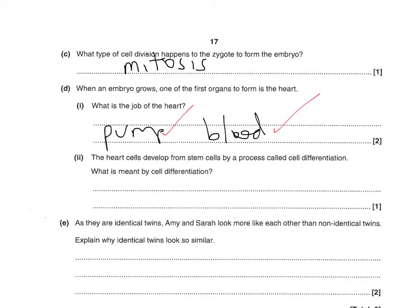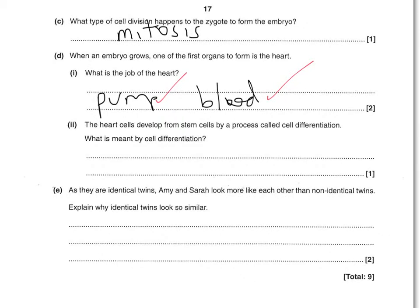Heart cells develop from stem cells by a process called cell differentiation. What is meant by cell differentiation? That is where cells become specialised — specialised for the job they're supposed to do. You could also put that cells become different, and that would also get you a mark.